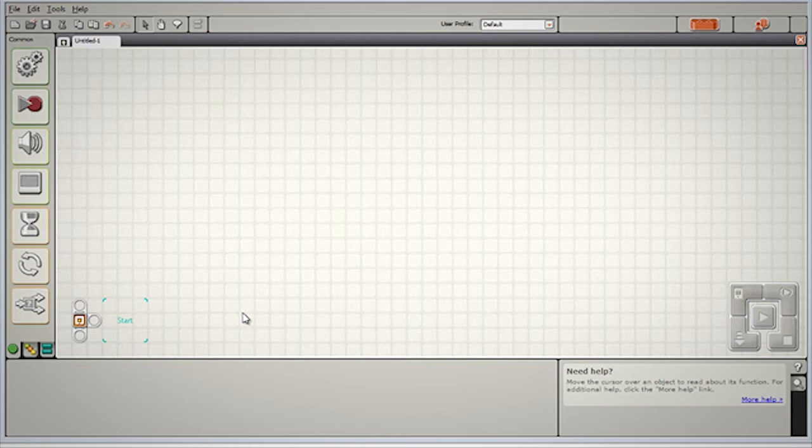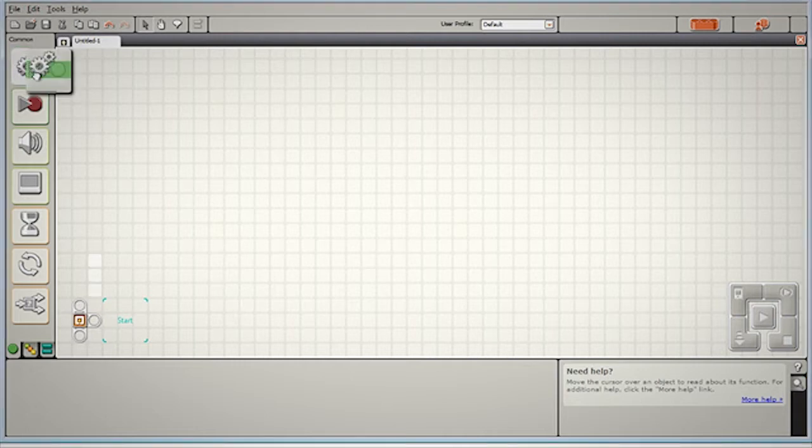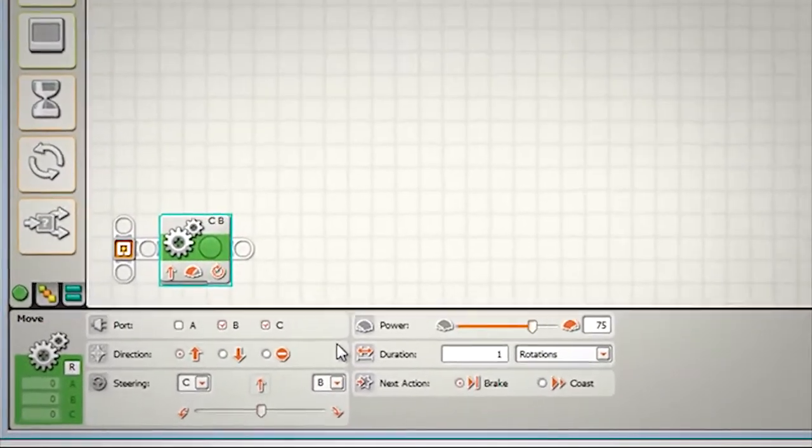Hi, I'm Damien Kee and in this video we're going to look at a way to make your robot do accurate turns. Let's see how we set up a program to do that. As we only want our robot to turn around, we can achieve this with one single move block.